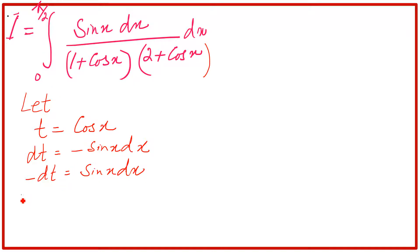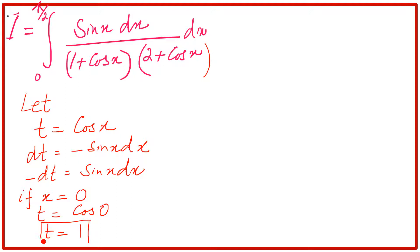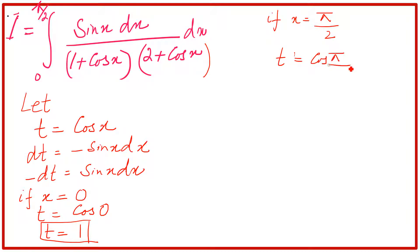We will change the limits. For the lower limit, if x is equal to 0, then t is equal to cos(0), and cos(0) is equal to 1. So t equals 1. For the upper limit, if x is equal to π/2, then t is equal to cos(π/2), and cos(π/2) is equal to 0. So the upper limit is 0.